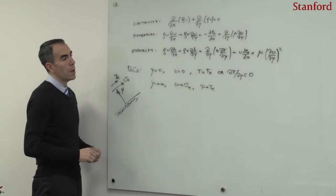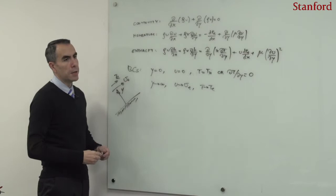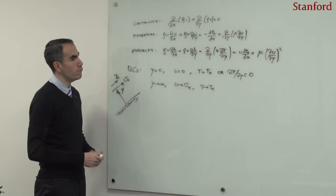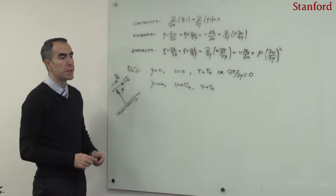We also mentioned that these equations are two-dimensional. You can also encounter three-dimensional boundary layers that are even more difficult. But there is an important simplification — an important reformulation of these equations based on similarity variables.